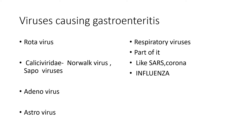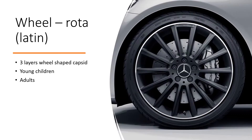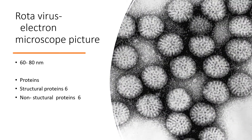Rotavirus — in Latin, 'rota' means wheel. Under the electron microscope, rotavirus looks like a wheel where the spokes radiate from the central hub. Rotavirus causes gastroenteritis mainly in young children and adults, occurring in epidemic as well as endemic form, where most diarrheal diseases in children are caused mainly by rotavirus. It is approximately 60 to 80 nanometers in size, requiring an electron microscope to visualize.